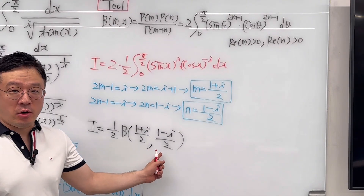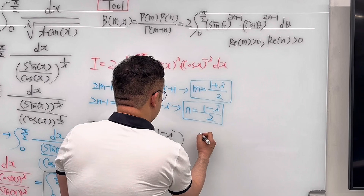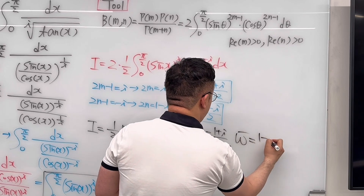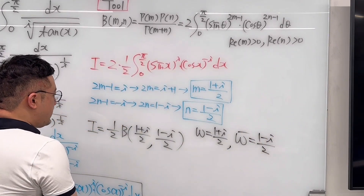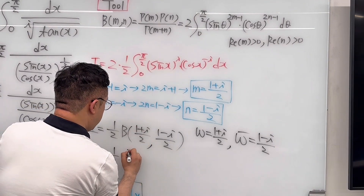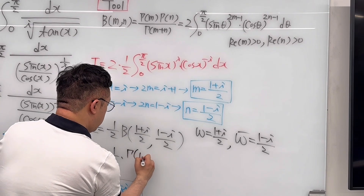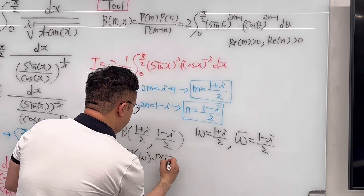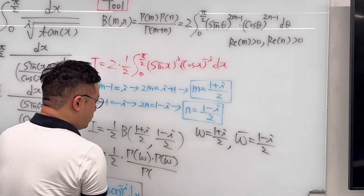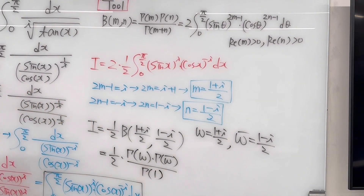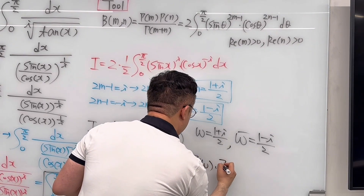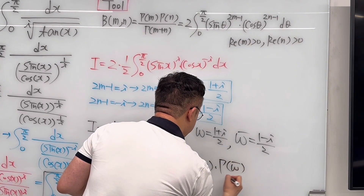It turns out m and n are complex conjugates. Let w equal one plus i over two; then the complex conjugate is one minus i over two. So we can write this as one half times gamma of w times gamma of the complex conjugate of w, divided by gamma of w plus its conjugate. Since w plus its conjugate equals two over two, which equals one, and gamma of one equals one, we are left with gamma of w times gamma of its conjugate, all over two.